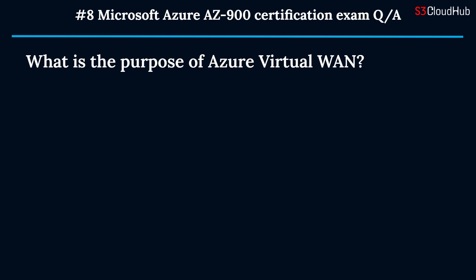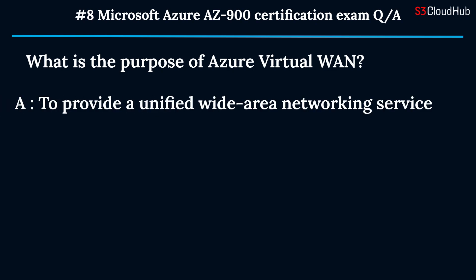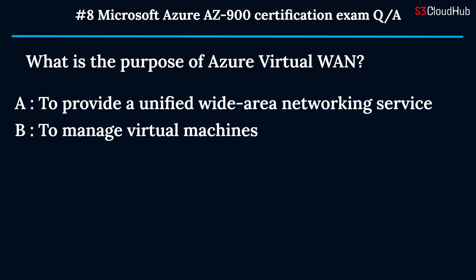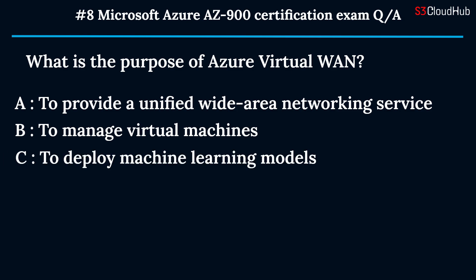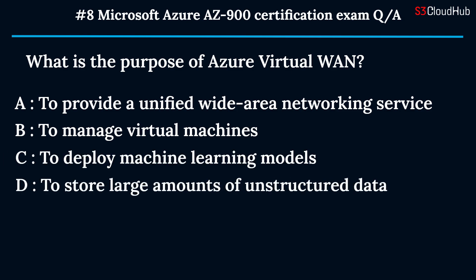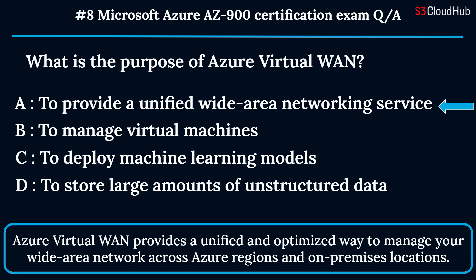The eighth question: what is the purpose of Azure Virtual WAN? Option A: to provide a unified wide area networking service. Option B: to manage virtual machines. Option C: to deploy machine learning models. Option D: to store large amounts of unstructured data. The correct answer is option A. Azure Virtual WAN provides a unified and optimized way to manage your wide area network across Azure regions and on-premises locations.